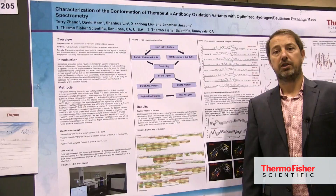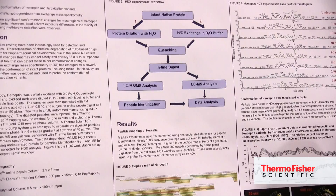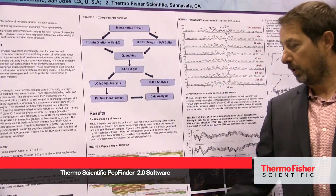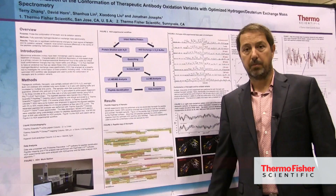The first step of this whole workflow is to do peptide mapping on the undeuterated sample — the trastuzumab and the oxidized form of trastuzumab. After processing the data with PEPFinder 2.0, we get clearly almost 100% sequence coverage for both samples.